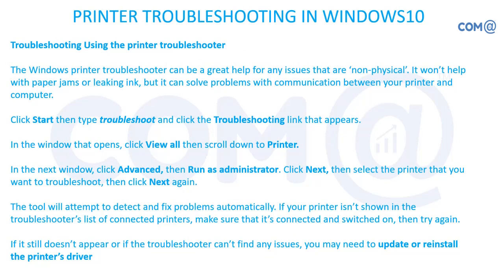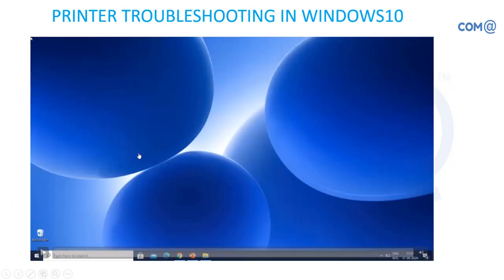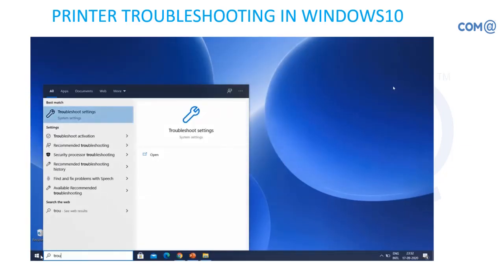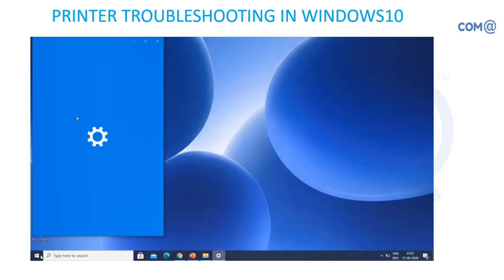To use the print troubleshooter in Windows 10, go to the search bar and type 'troubleshoot.' You will get a troubleshooting link; from there choose the printer, printer control, then choose from the list of printers. Run it as administrator so permissions do not restrict it, then follow the instructions given by the operating system. Opening troubleshooting settings and opening the printer section is the first step.